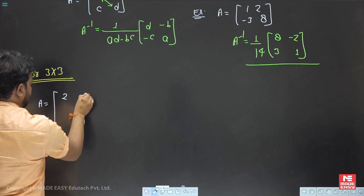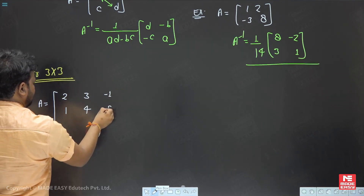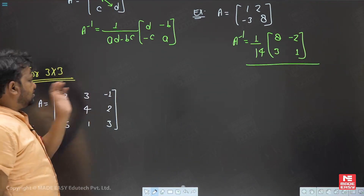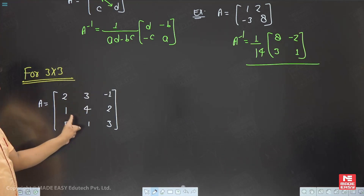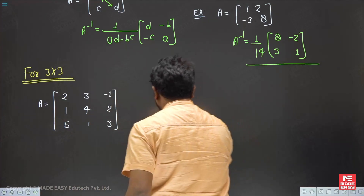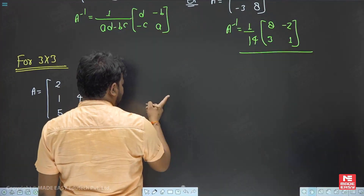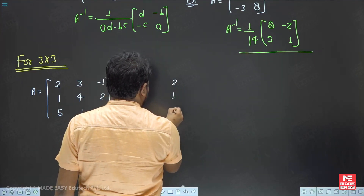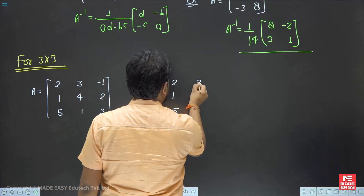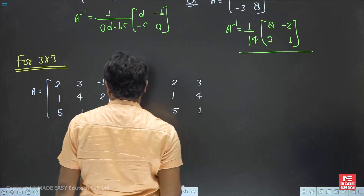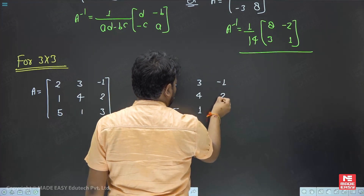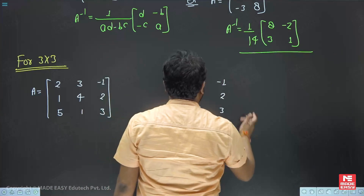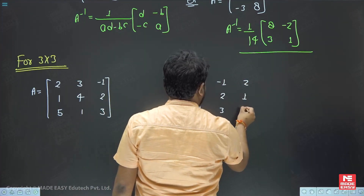The matrix is [2, 3, -1; 1, 4, 2; 5, 1, 3]. We have already dealt with this matrix and calculated its determinant. The trick to calculate the determinant: take the first two columns and append them — first column is [2, 1, 5], second column is [3, 4, 1], third column is [-1, 2, 3] — then add the first two columns again alongside.